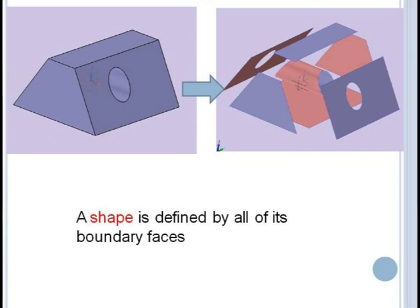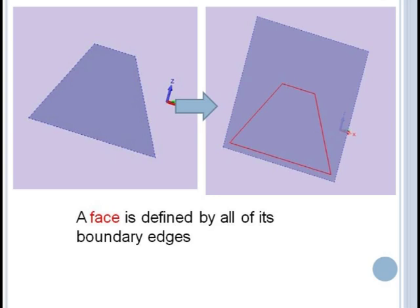A solid object has surfaces or faces which form its outer boundary. Each face has a set of boundary curves called edges which define its material region and an edge has endpoints or vertices which define its outer limits.